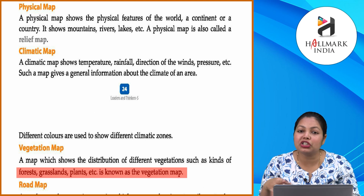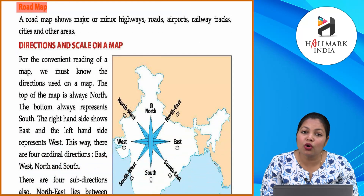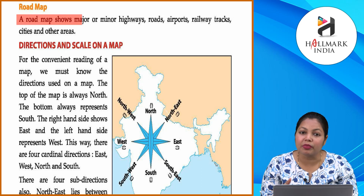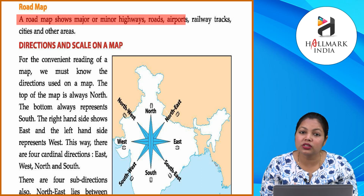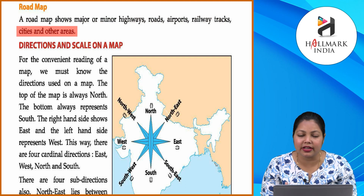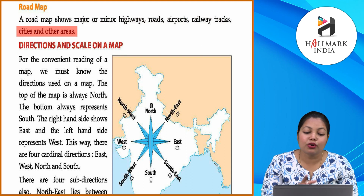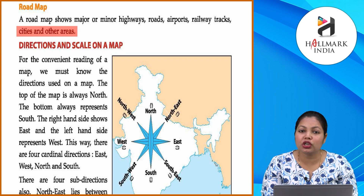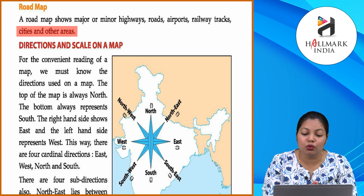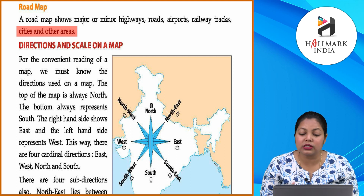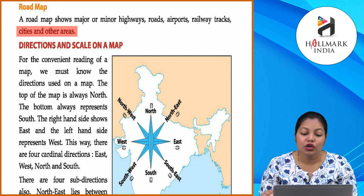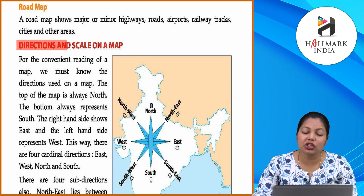Road map: A road map shows major and minor highways, roads, airports, railway tracks, cities and other areas. Road map jo hai wo major aur minor dono taraf ke highways, roads, airports, railway tracks — yeh sari chizein show karta hai.